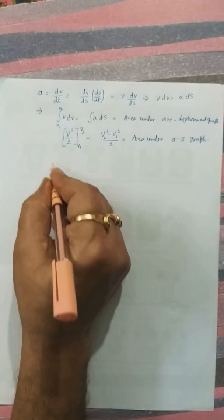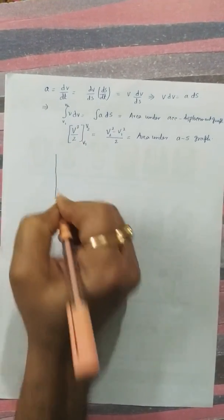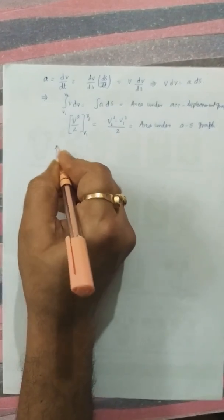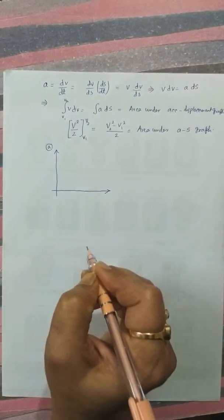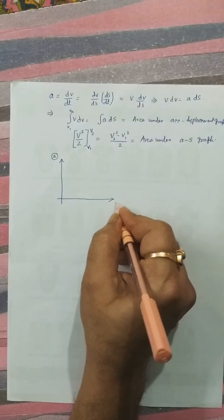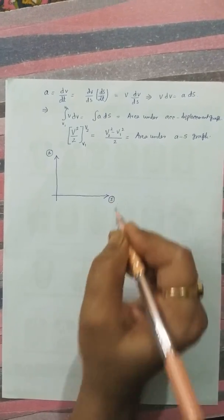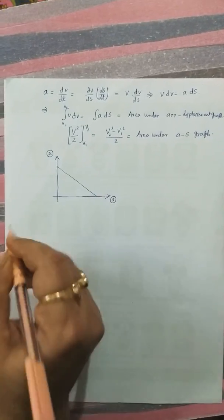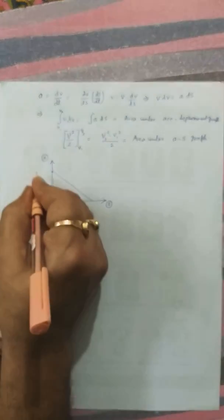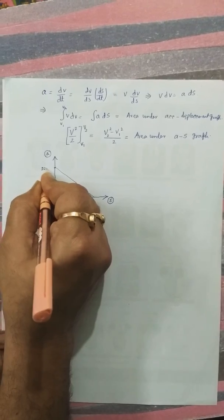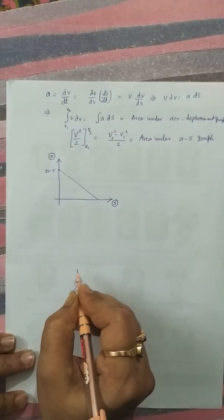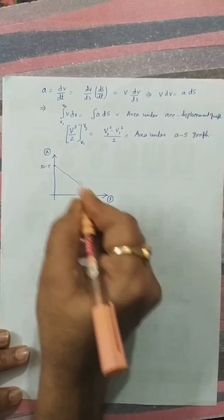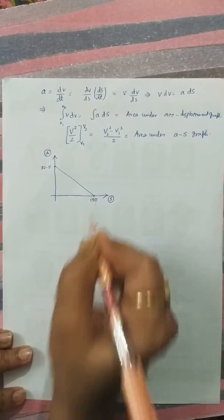Let us take a small example. Imagine that acceleration linearly changes with displacement S, where both are in SI units, where this point is 22.5 meter per second square and this particular point where acceleration is 0 is 150 meters.